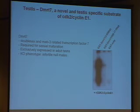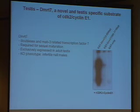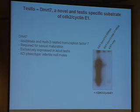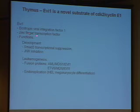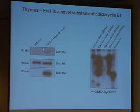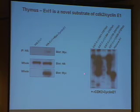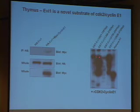In the testes, we identified the protein DMRT7, which is involved in sexual maturation, as a substrate of the Cyclin-E1 CDK2 complex — a novel and definitely tissue-specific interactor of Cyclin-E1. In the thymus, we identified EVI-1 as a novel substrate of CDK2. This is a zinc-finger transcription factor that has a role both in development and leukemogenesis. By IP Western, we detected a low interaction between Cyclin-E1 and EVI-1, however our in vitro kinase assay confirmed that EVI-1 is a substrate of CDK2 Cyclin-E — again, a tissue-specific novel interactor of this complex.